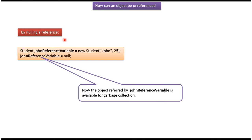Here you can see how to nullify the reference. I have created a new student object, and this student object is referred to by the John reference variable. Then I am assigning null to the John reference variable, so that this student object is eligible for garbage collection.